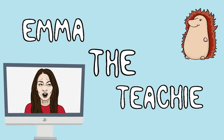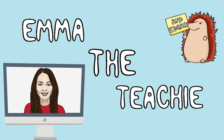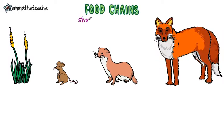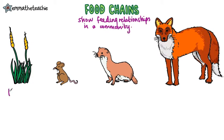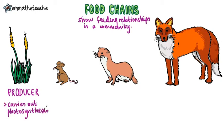Today we're going to learn about food chains and feeding relationships. Food chains are simple ways of showing the feeding relationships within a community. They always start with a producer — an organism that can use light to carry out photosynthesis to make oxygen and glucose. Producers are green plants, algae like seaweed, and phytoplankton.